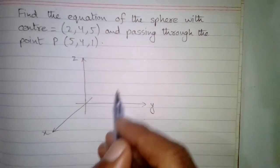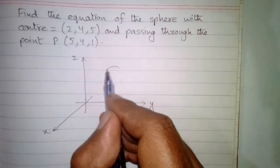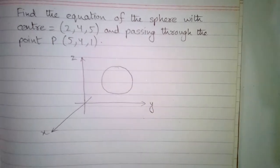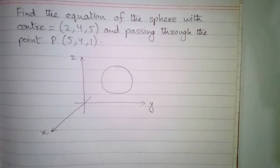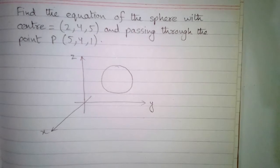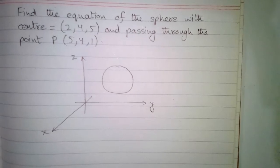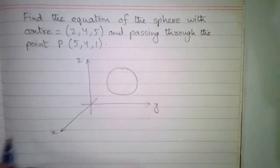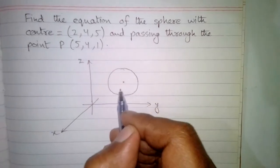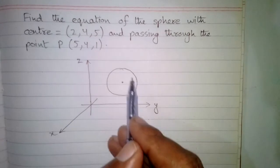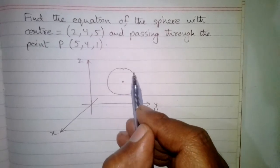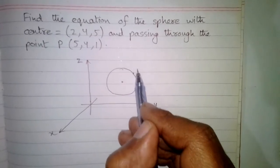Suppose that this is the sphere whose equation we are going to find out. This is the center of the sphere, and this sphere is passing through the point P.